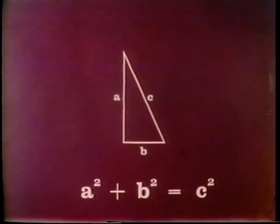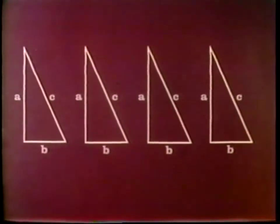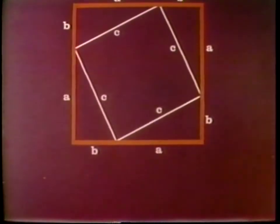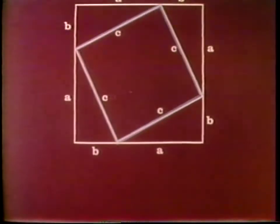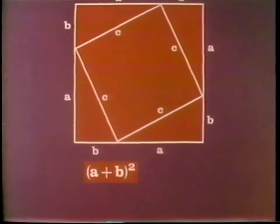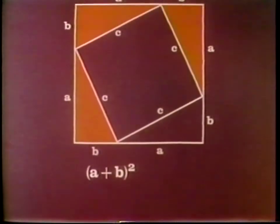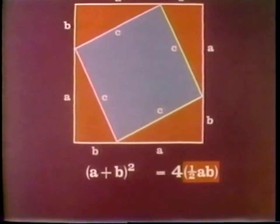One mathematician proved the Pythagorean theorem this way. He set four congruent right triangles so that the sides A plus B form a large square. Each hypotenuse, C, forms the side of a smaller square. The area of the large square is equal to the side A plus B squared. And the area of the large square is also equal to four times the area of each triangle, equal to four times one-half AB, plus the area of the smaller square, which is C squared.